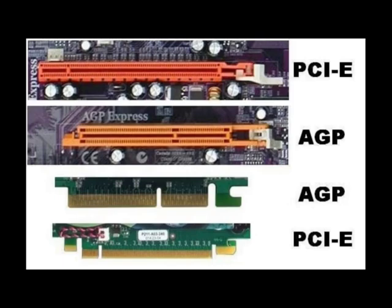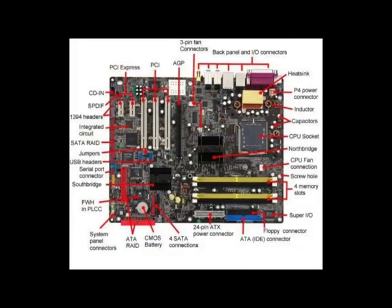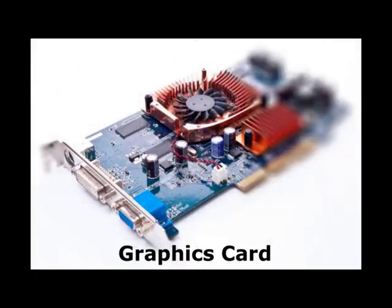Accelerated Graphics Port (AGP) is an earlier hardware interface from Intel for connecting a graphics card or display adapter to a PC. Introduced in 1997 and superseded by PCI Express in the late 2000s, a single AGP slot on the motherboard provided a direct connection between the card and memory.